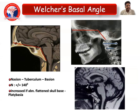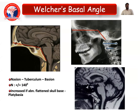The Boogaard's basal angle is an angle measurement where the first line is drawn from the nasion to the tuberculum to the basion. The normal angle would be less than or equal to 140 degrees. In case of platybasia, where there is abnormal flattening of the skull, the angle would be increased.